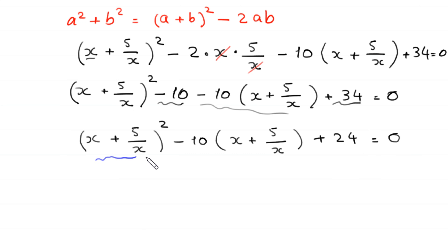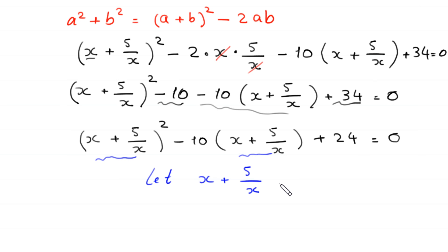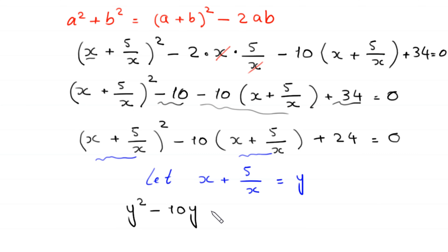Now we have the same expression x plus 5 over x appearing twice. So we let y equal x plus 5 over x. Then this equation becomes y squared minus 10y plus 24 is equal to 0.